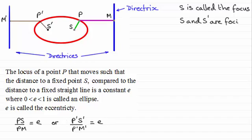And so what we now have is two directrices and we've also got S dash as another focus, so collectively S and S dash are called foci.